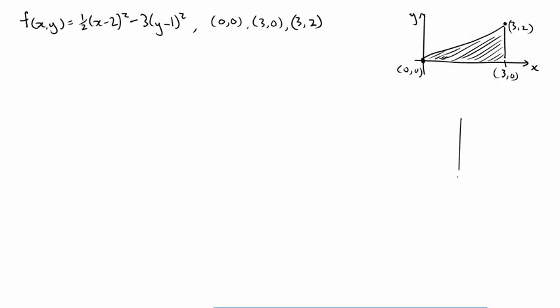If I draw this in three space, here's the y axis, the x axis, and the z axis. The triangle looks like this. Now there's some piece of a surface defined on that triangle. Maybe it looks like this. We're not quite sure what it looks like, but we want to know what the highest and lowest points are on that surface over this triangle.